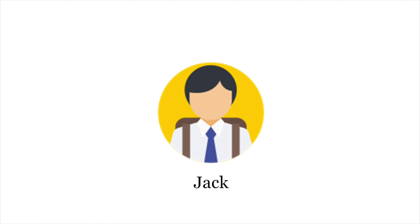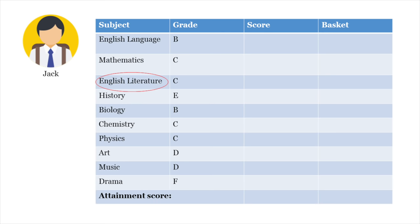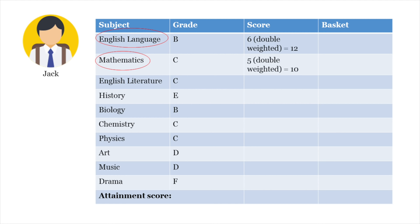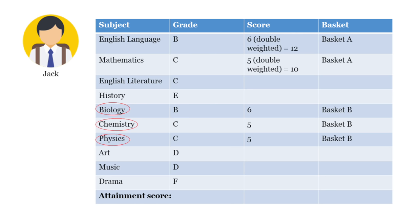It might help to take a look at a worked example. Let's call him Jack. Jack did ten GCSEs. He did English Literature as well as English Language, so he gets double-weighting for his English Language score and for his Maths score, which both go into Basket A. His top three EBAC scores are Biology, Chemistry and Physics, so they are counted and go into Basket B. His top three other scores are for English Literature, Art and Music.